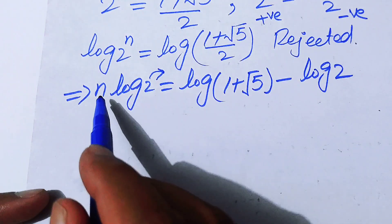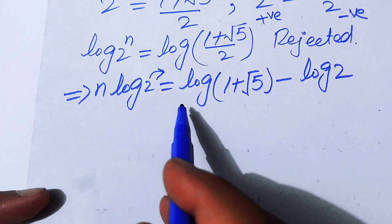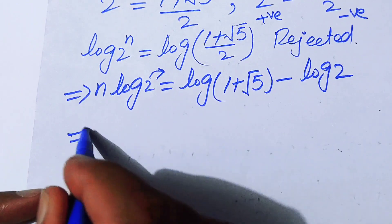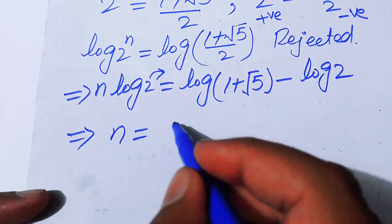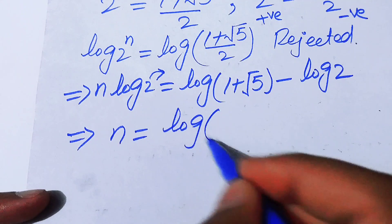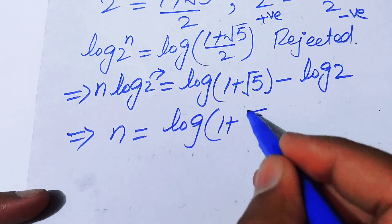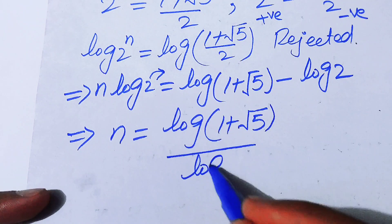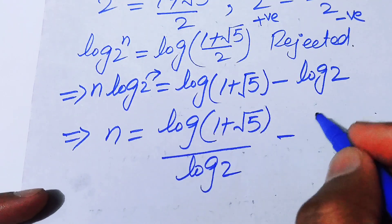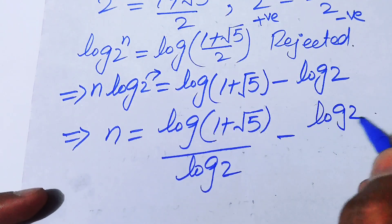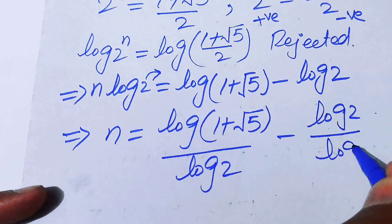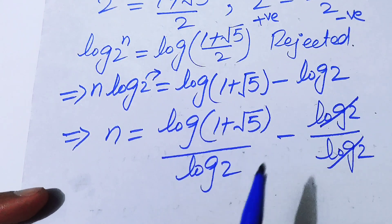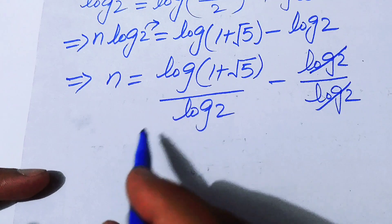Moving log 2 to the right-hand side — since it is multiplied by n, when moved it divides each term — we get n equals log(1 + √5) over log 2, minus log 2 over log 2. The last term simplifies to 1, so n equals log(1 + √5)/log 2 minus 1.